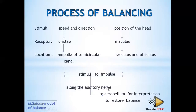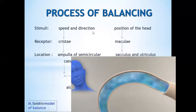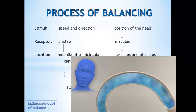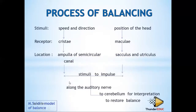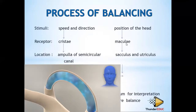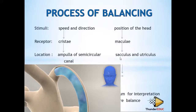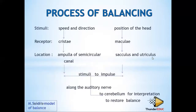To repeat: a change in the speed and direction of the head stimulates the cristae found in the ampulla of the semicircular canal. A change in the position of the head stimulates the maculae found in the saccule and utricle of the semicircular canal. The stimuli are converted into impulses, which are sent along the auditory nerve to the cerebrum for interpretation, to restore balance.